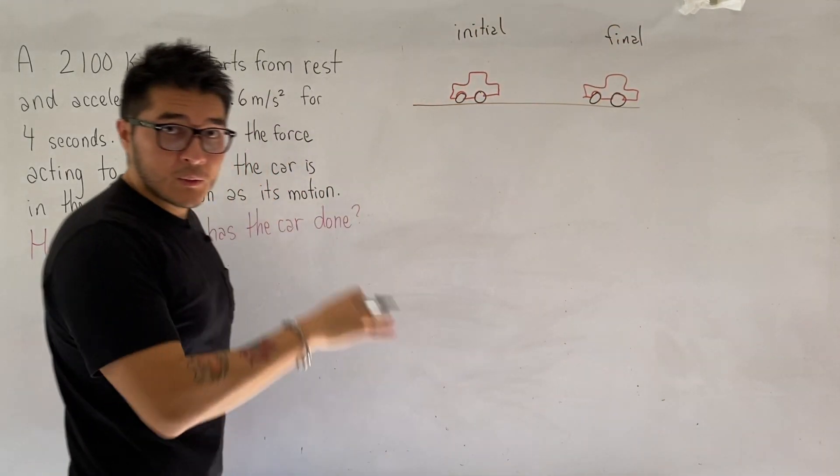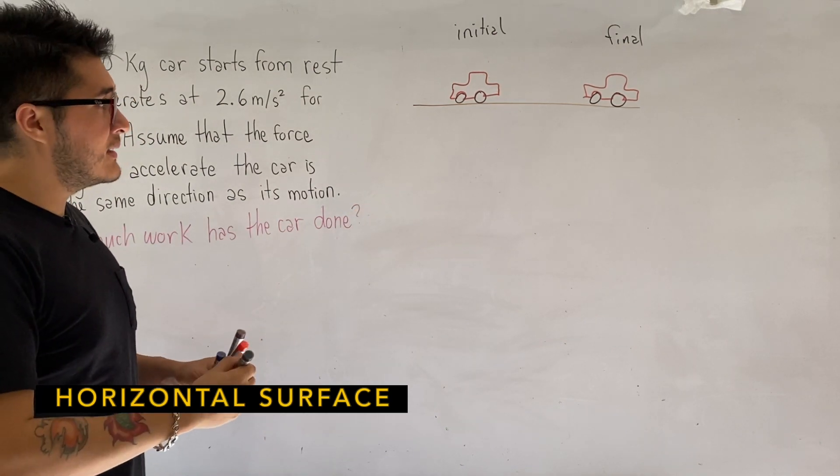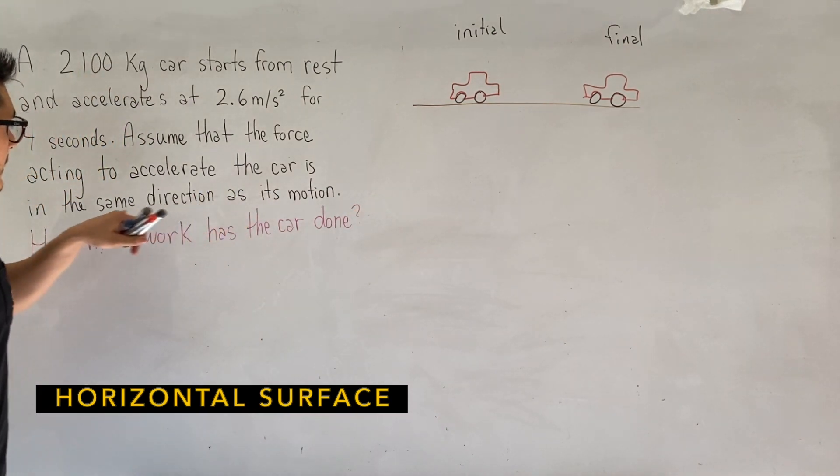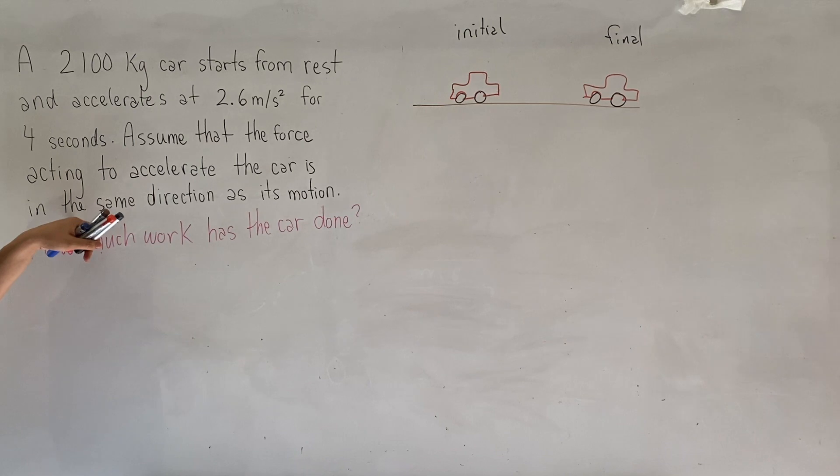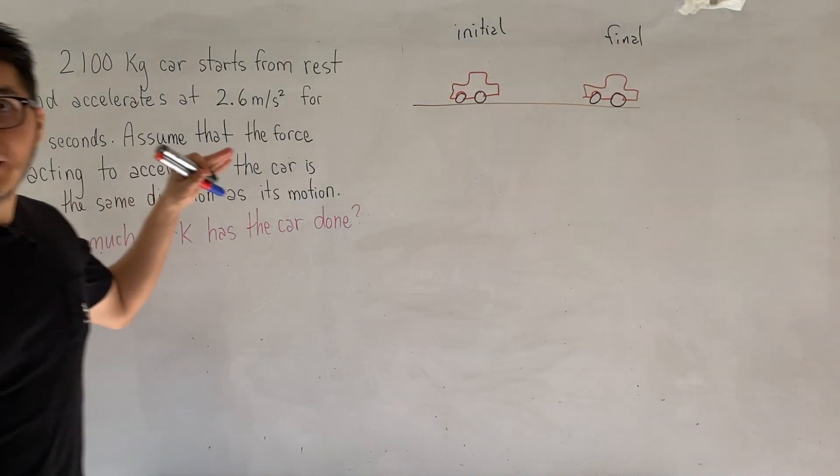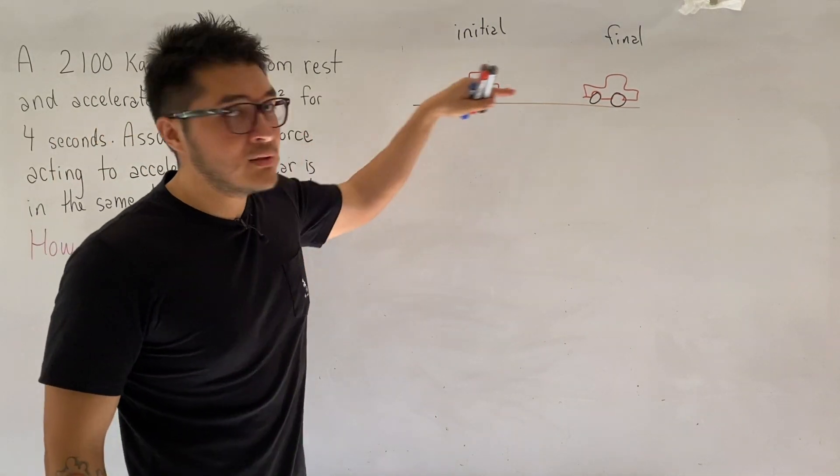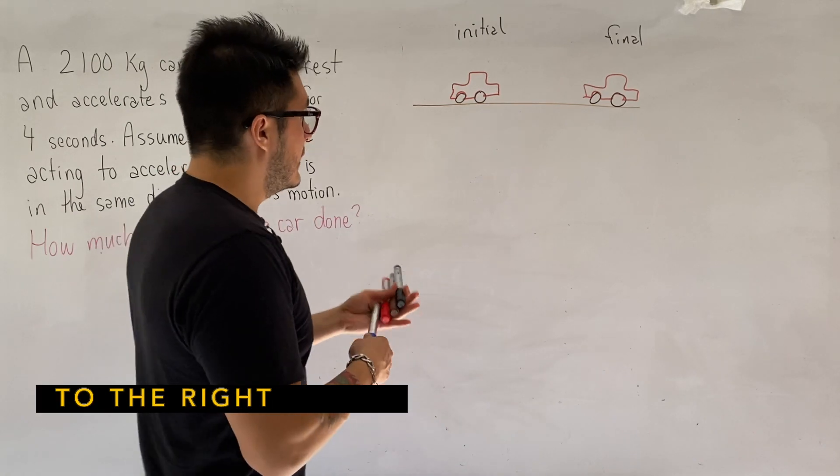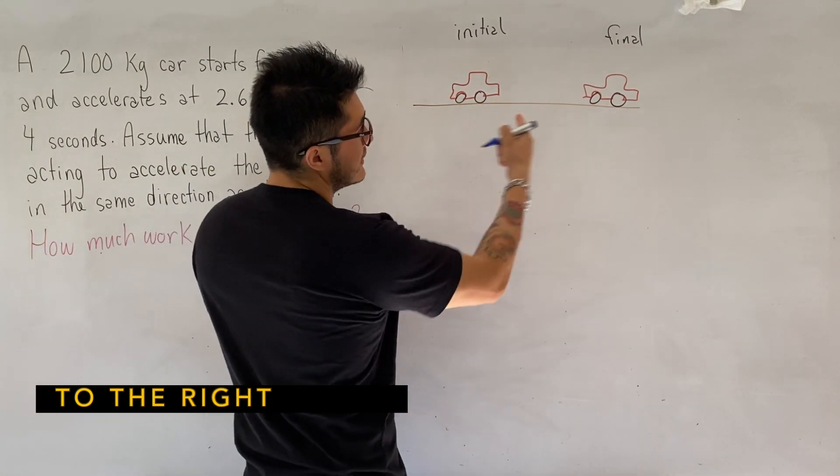So we have initial and final. So we are assuming that we're on a horizontal surface, and since the force is making this car accelerate in the same direction, let's just make it as simple as possible and assume it is to the right. So that displacement is taking place to the right.